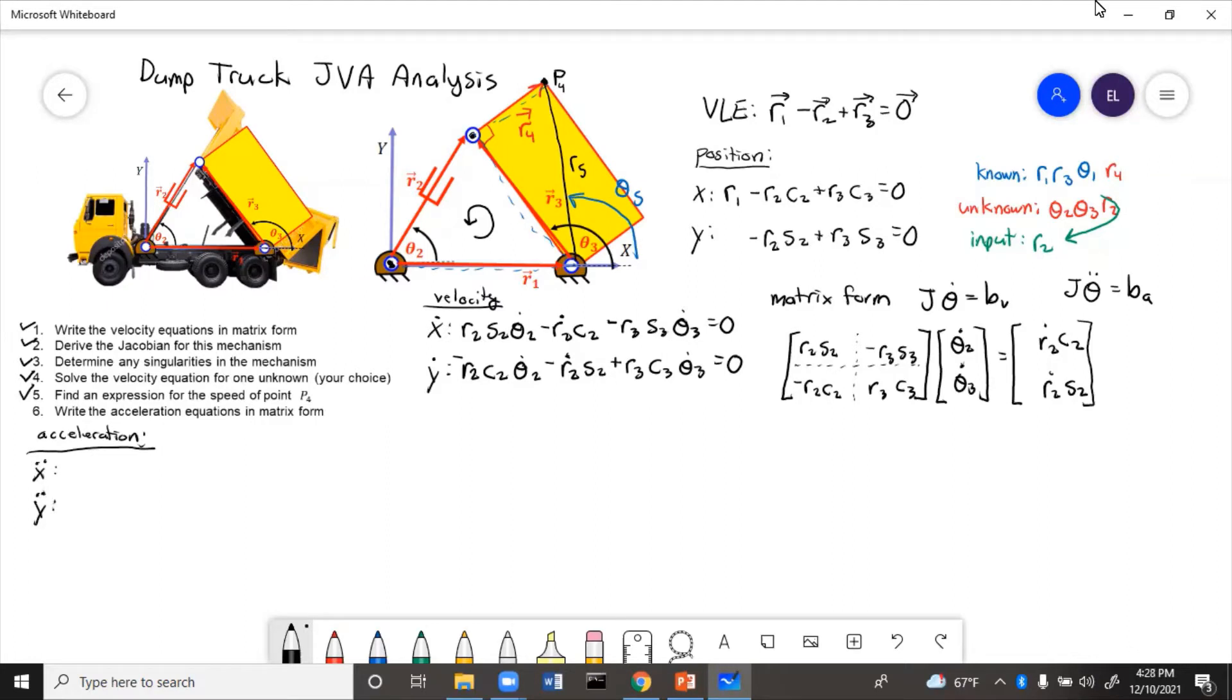Now from the first velocity term here, x dot, we have r2 s2 theta 2 dot. We'll get three terms out of that one because r2 changes, sine of theta 2 changes, and theta 2 dot also changes. So that'll split into three terms. Now the r2 dot c2 will split into two terms. One for the r2 dot will become r2 double dot, and then the cosine of theta 2 will also change.